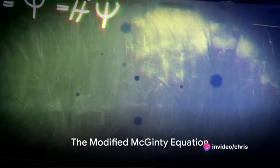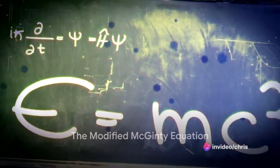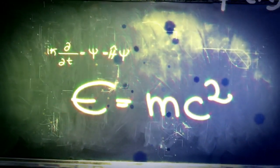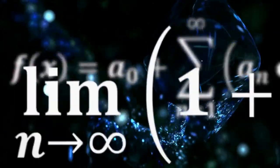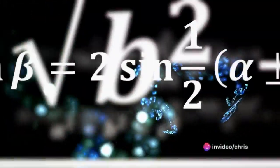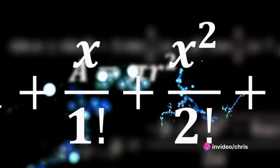At the heart of this quest lies the modified McGinty equation, a mathematical expression that dares to bridge the seemingly insurmountable gap between the quantum world and general relativity. So, what is this equation, and why does it matter?